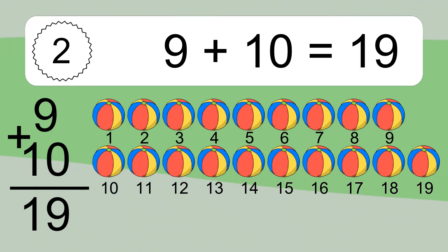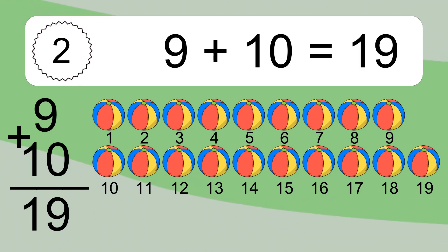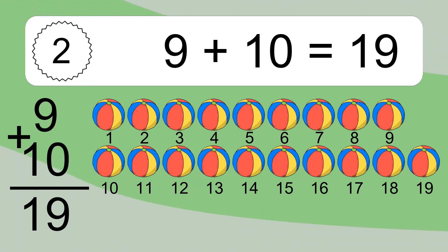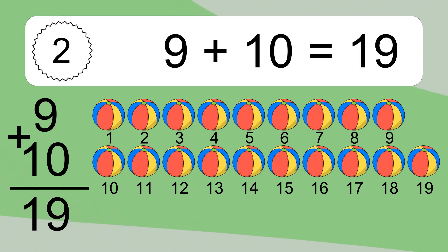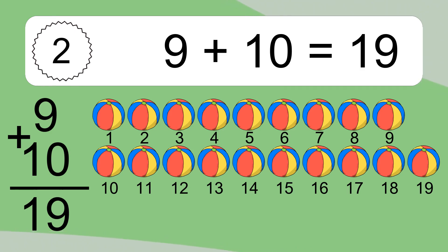Let's count it: 1, 2, 3, 4, 5, 6, 7, 8, 9, 10, 11, 12, 13, 14, 15, 16, 17, 18, 19.